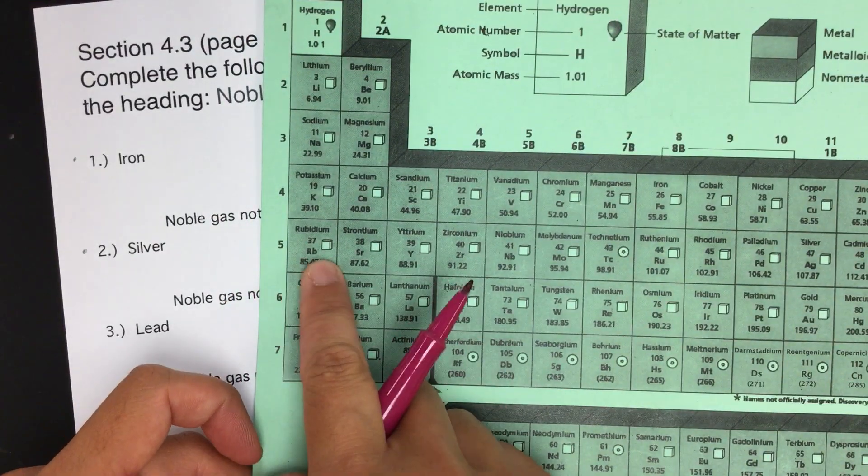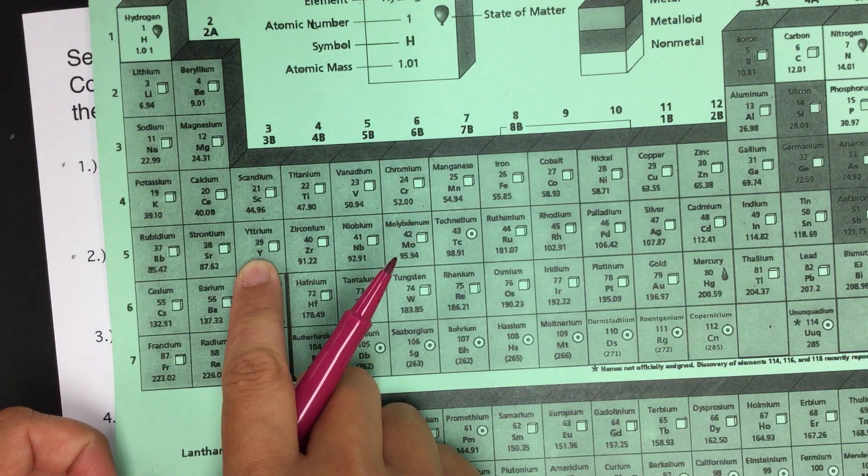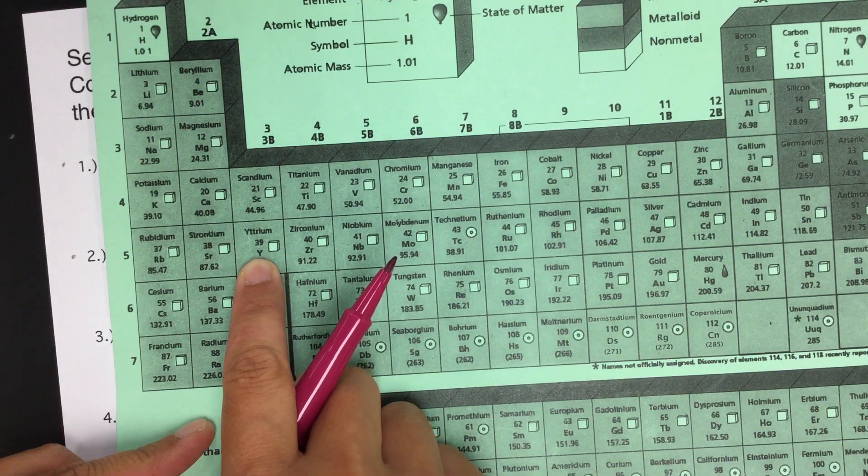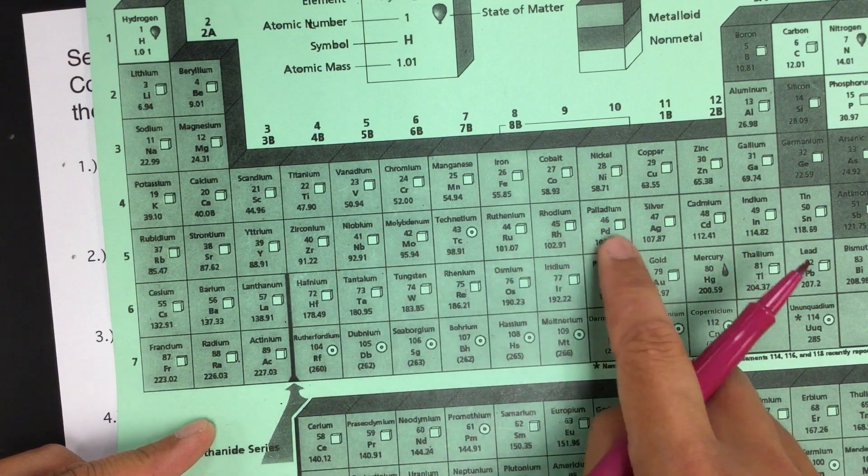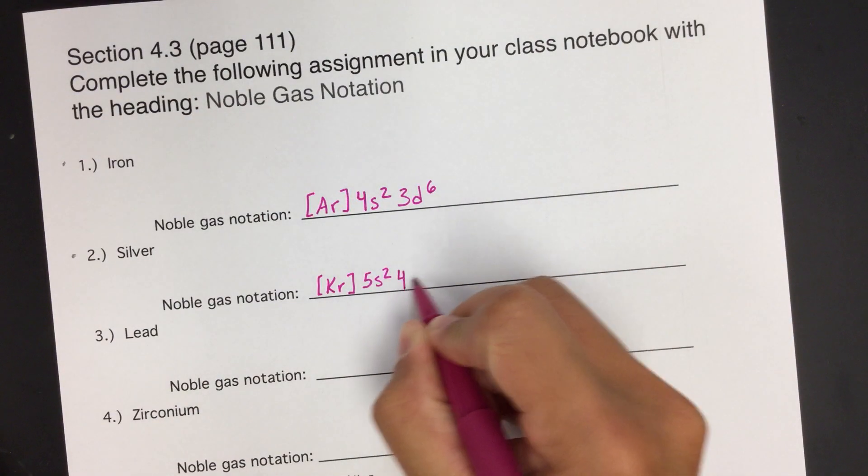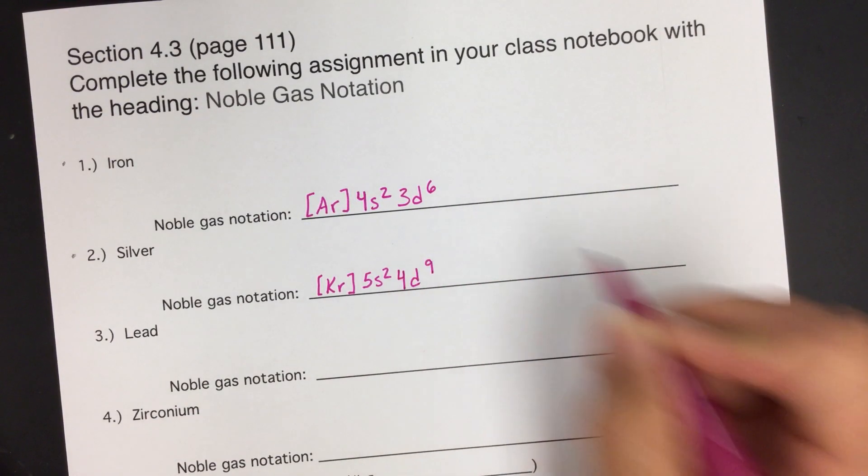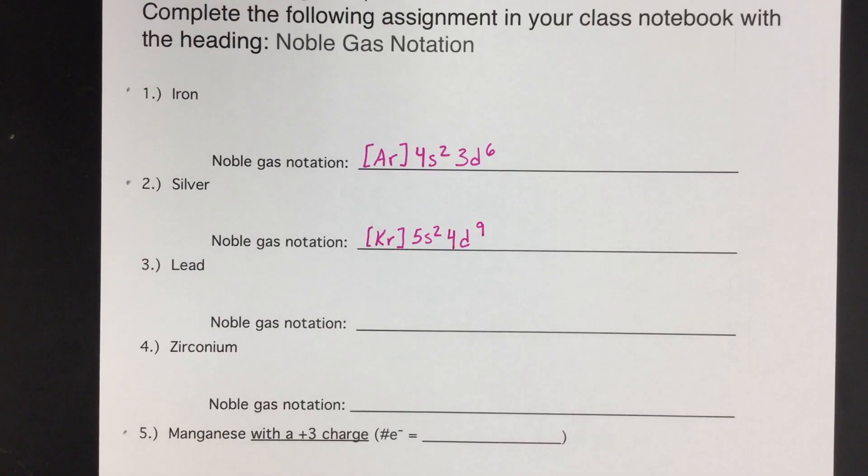I'm going to go a little faster through this one here, now that you're getting the hang of it. So krypton in brackets, and then we pick up where we left off. So 5s2. So 5s2 gets us here. And now we're in 4d. Remember, they're an energy level behind. So 4d, 1, 2, 3, 4, 5, 6, 7, 8, 9. Gets us to silver. So 4d9. Done. Easy. So much time is saved.